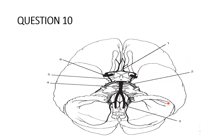For the last question, let's recap the labels. Number one is the anterior communicating artery, which connects the left and right sides of the Circle of Willis. Number two is the posterior cerebral artery — the terminal branch of the basilar artery. Number three is the left vertebral artery.